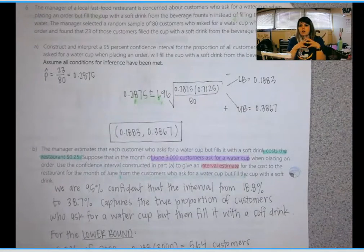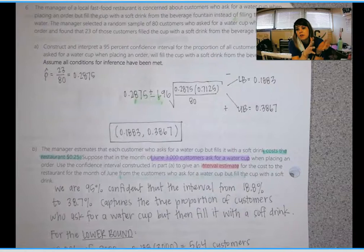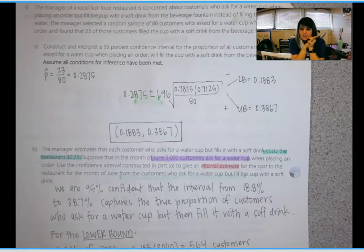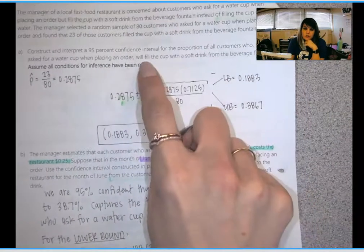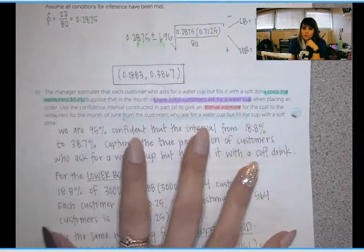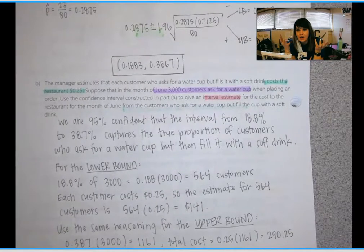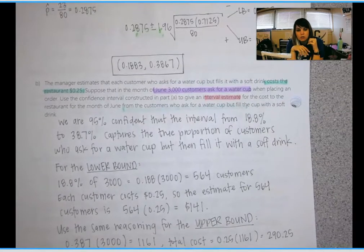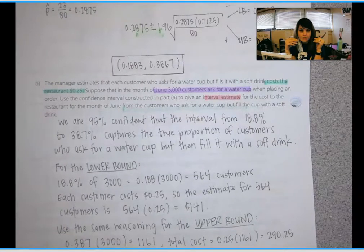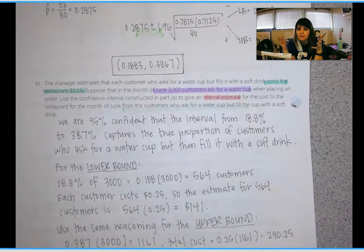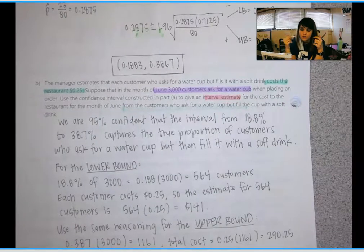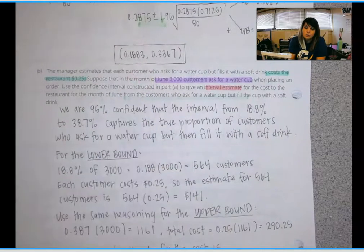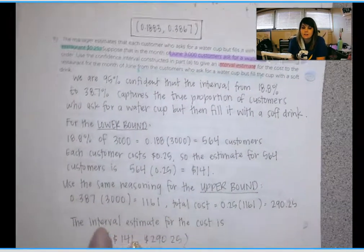So at this point, I think all of these are previously released or previously given questions that have been released for you guys to practice. So we build a confidence interval for proportion. And they specifically say proportion in the prompt. Conditions have been met so you can just calculate the proportion. So we think between about 19% and 39% of people will fill their water cup with soda. So they ask for a water cup and then they cheat and they fill it with soda. So that is our estimate.